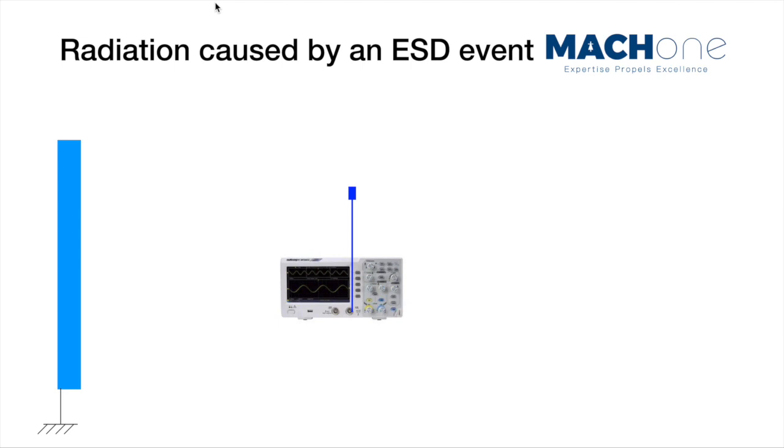So what exactly happened was when the engineer was approaching the door, before that he was sitting in a chair, so supposedly he started to accumulate lots of charge in his body. Then when he was walking towards the door and touched the door, an ESD event happened.